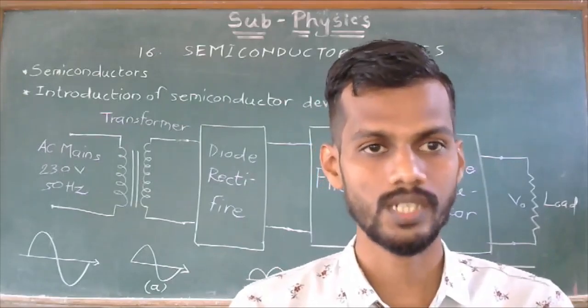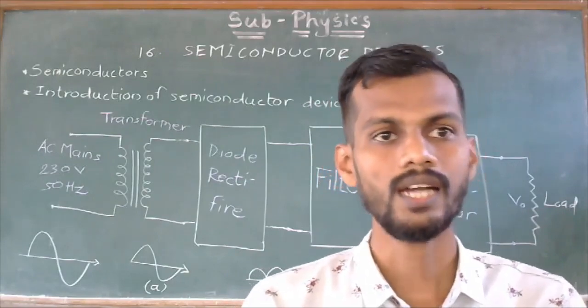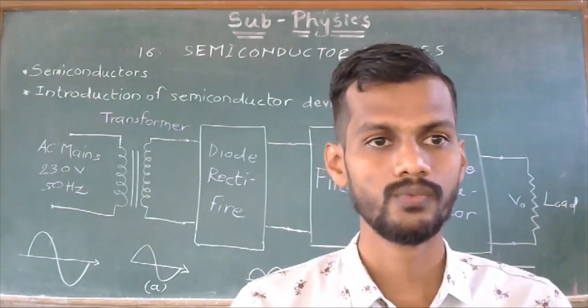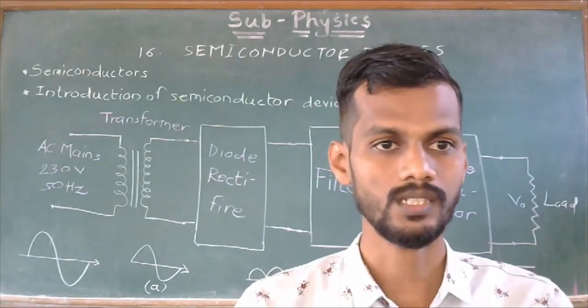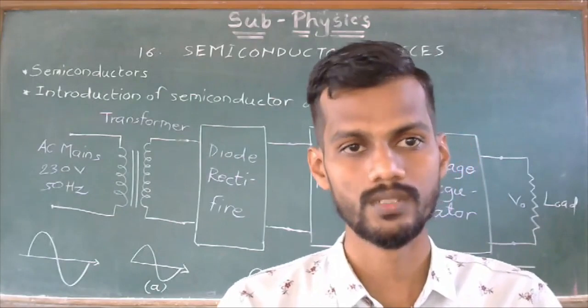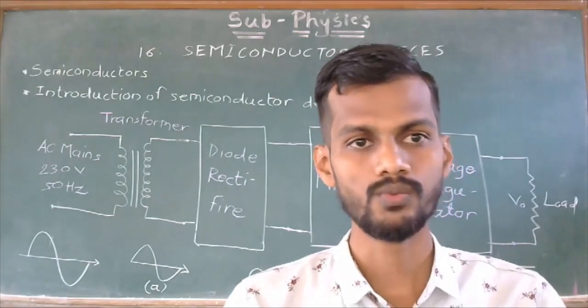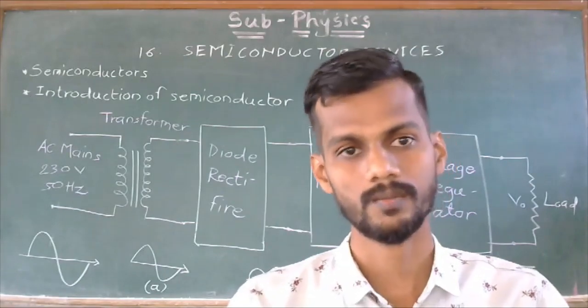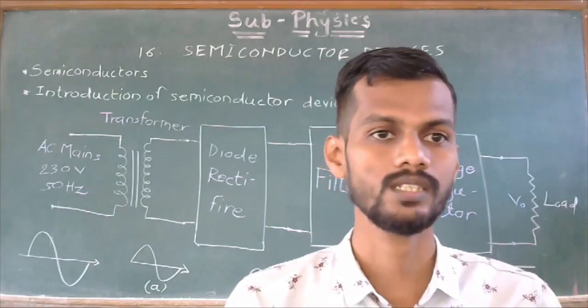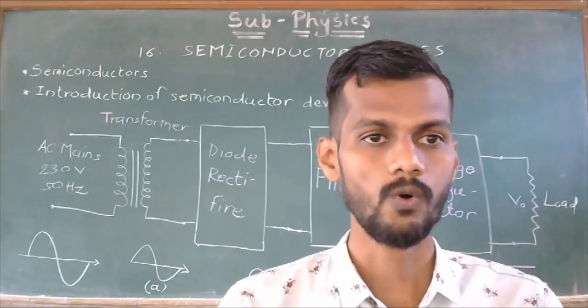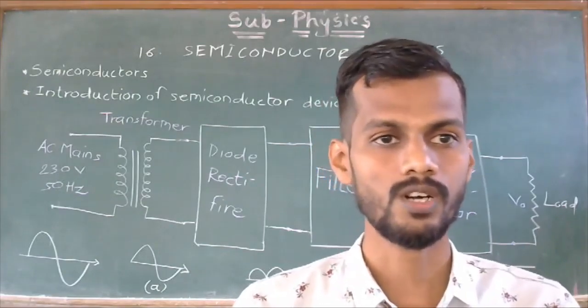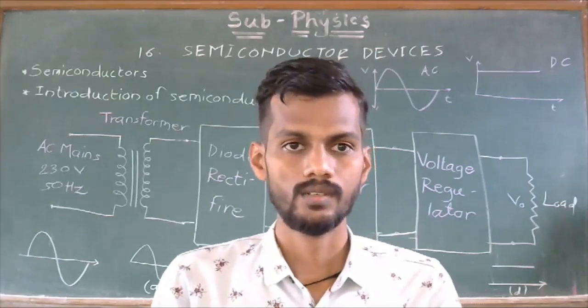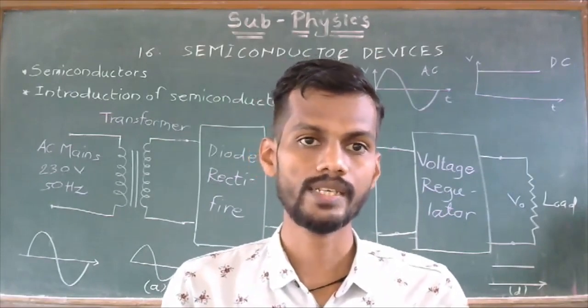And then we have also studied a p-n junction diode and its characteristics. We know that when a diode is in forward bias mode, it acts as a closed switch. When a diode is in forward bias mode, it allows current to pass through a diode circuit. And when a diode is in reverse bias mode, it acts as an open switch. Current does not pass through a diode circuit.